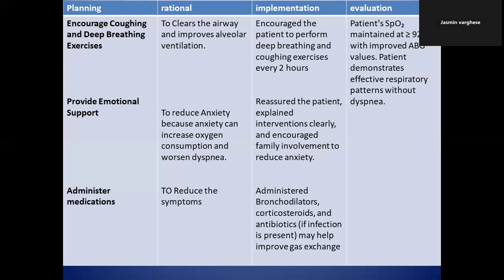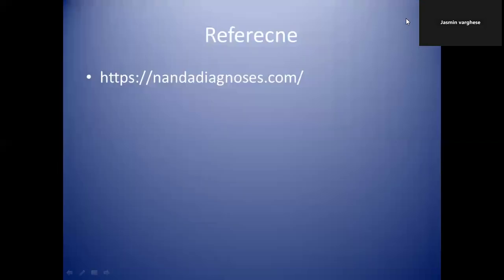In the evaluation column, you can write that the patient maintains oxygen saturation levels with improved arterial blood gas values, and the patient demonstrates an effective respiratory pattern without dyspnea. This concludes the nursing diagnosis and care plan for impaired gas exchange. Next time we'll cover another nursing diagnosis.